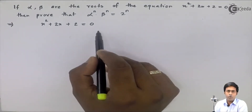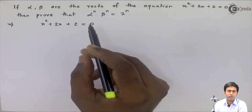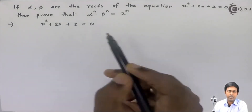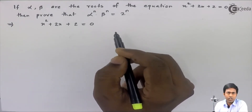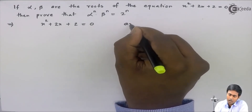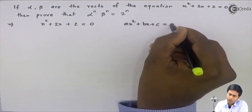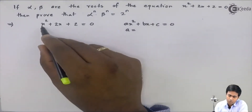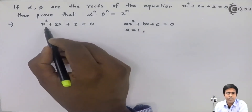I have already written the equation. If I find the factors of this equation, they will not come directly. So for this we will use the quadratic formula method. I will compare this to the standard quadratic equation form ax² + bx + c = 0. From here we get a = 1, because the coefficient of x² is 1.